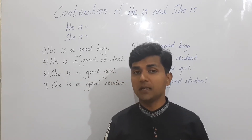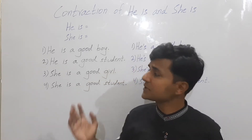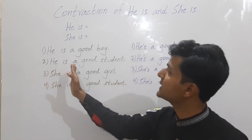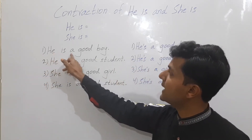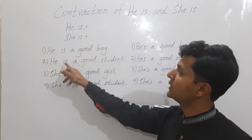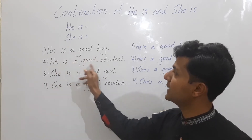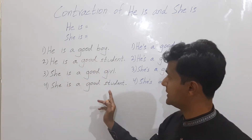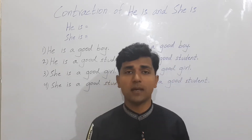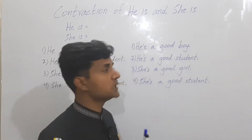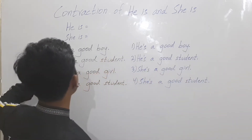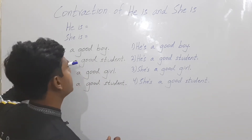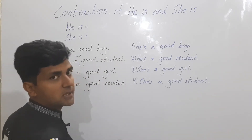The short form of 'he is' and 'she is' — so let's discuss. There are four sentences written: 'He is a good boy,' 'He is a good student,' 'She is a good girl,' 'She is a good student.' We have to make the short form, we have to shorten 'he is' and 'she is'.